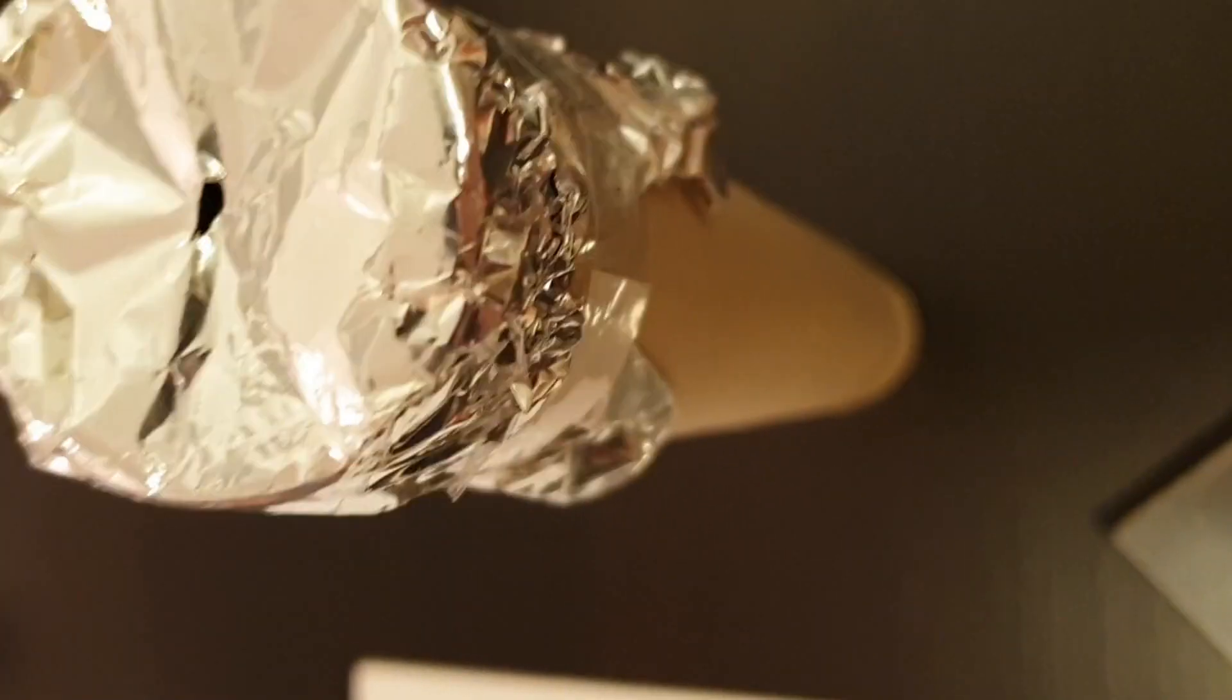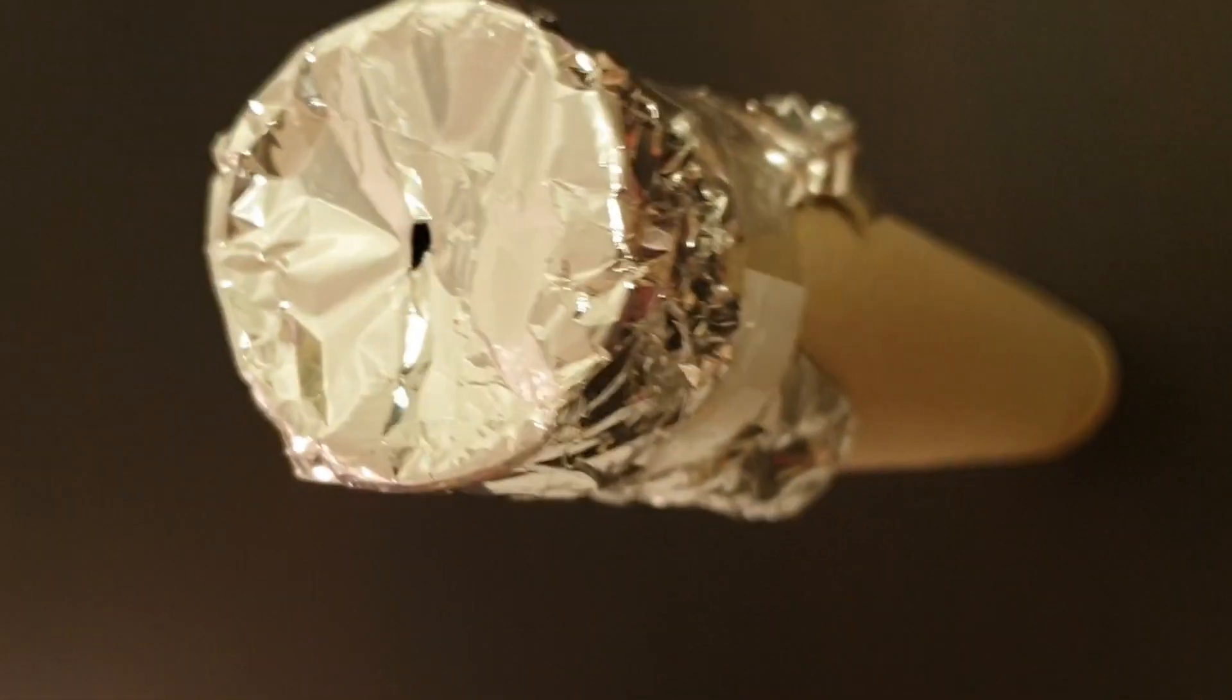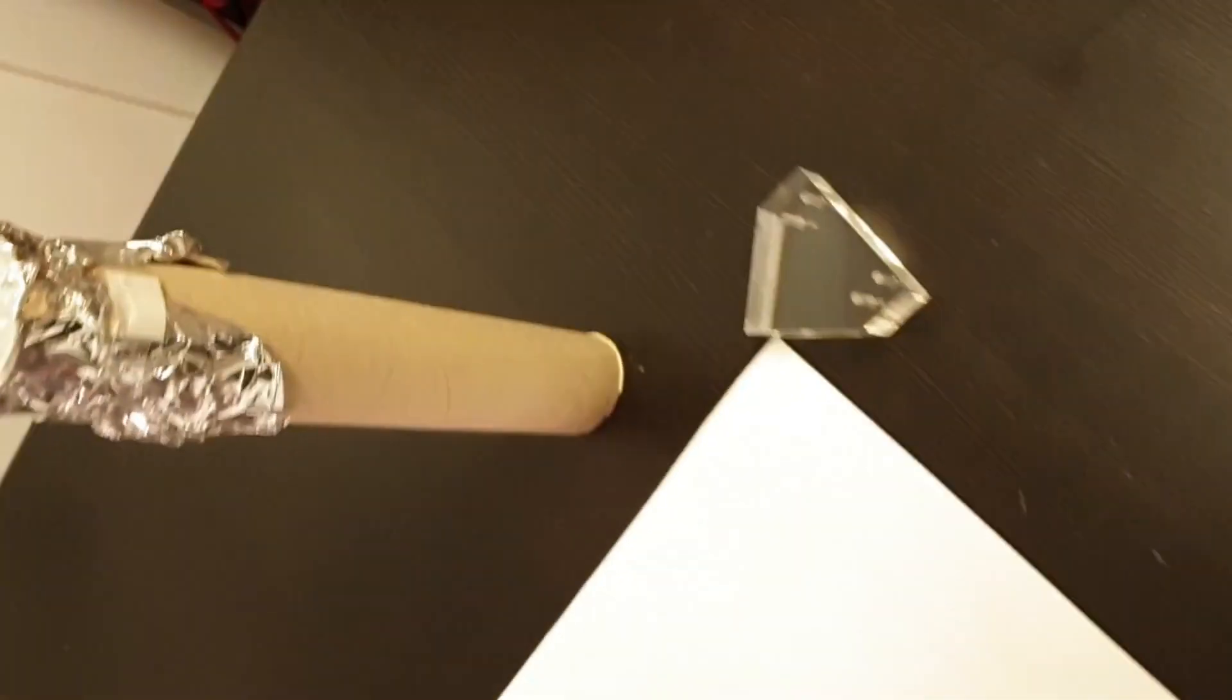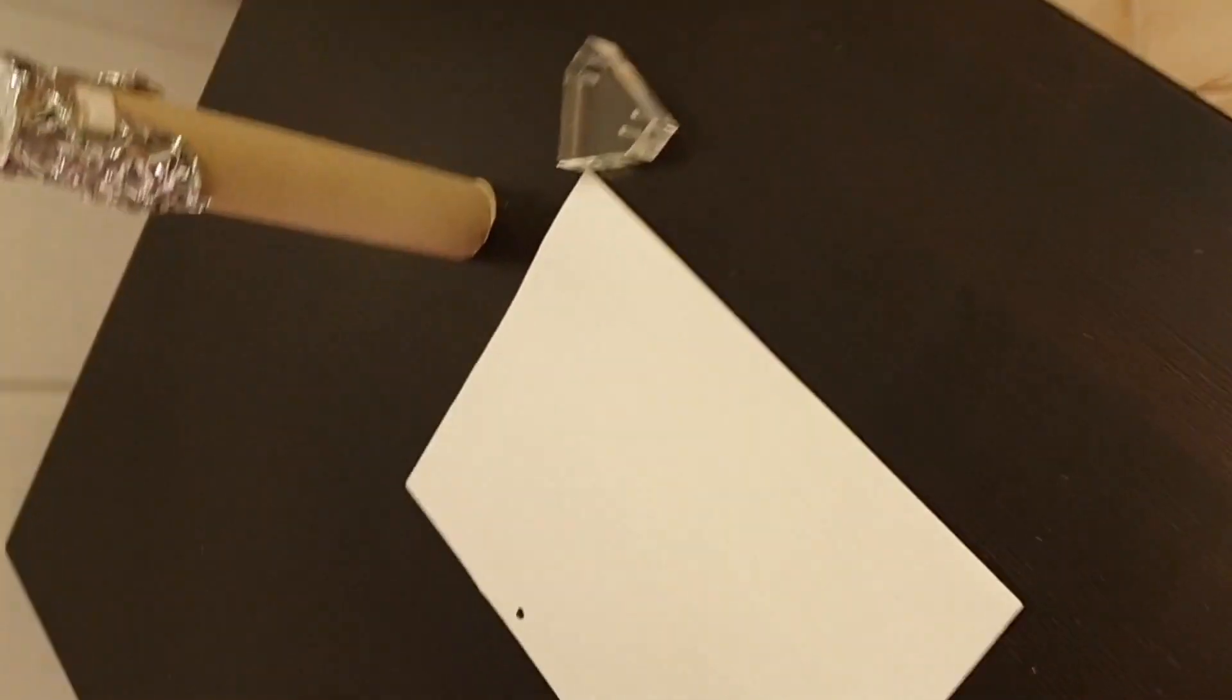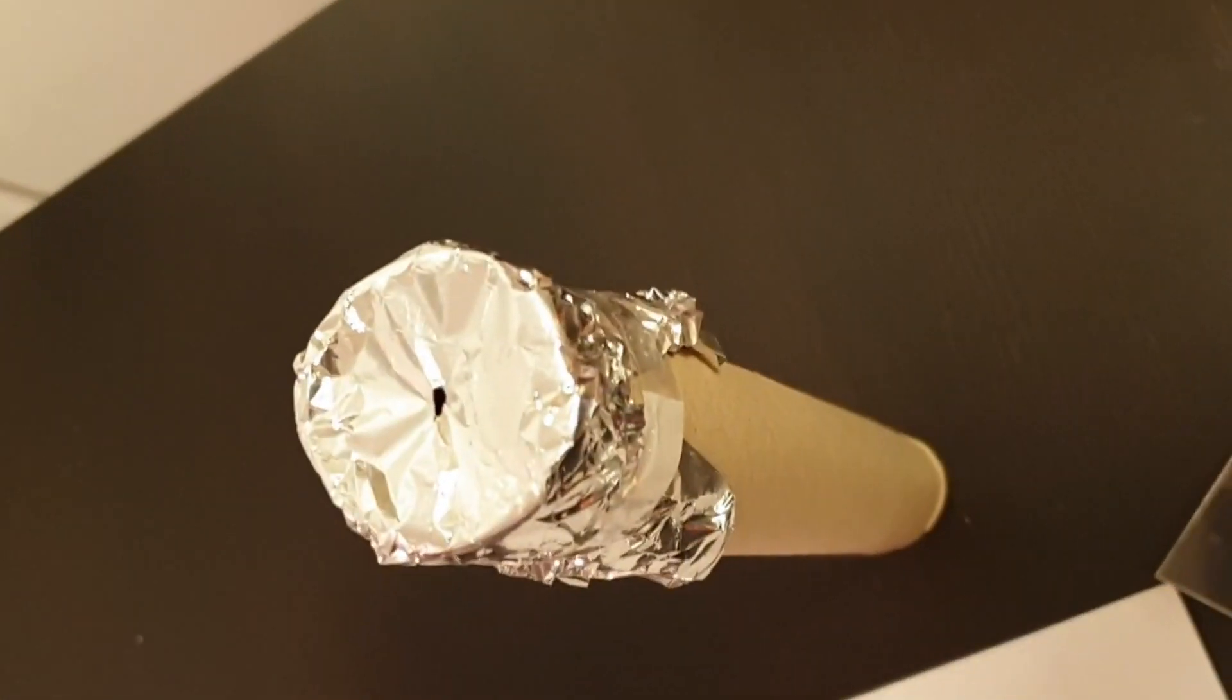A long and light-tight paper roll is covered with aluminum foil at one side. Inside the foil there is a small hole which lets the light of a flashlight, which is placed on the other end of the roll, pass through. The light rays hit the glass prism, which changes the direction due to refraction.